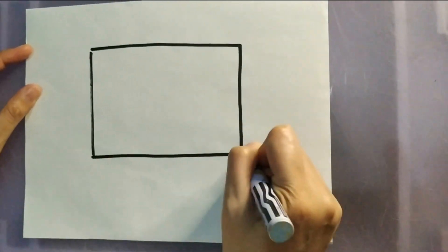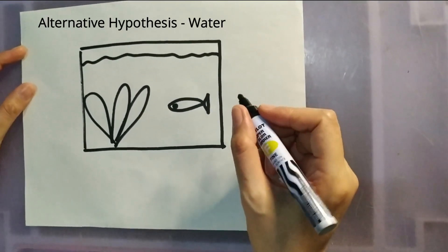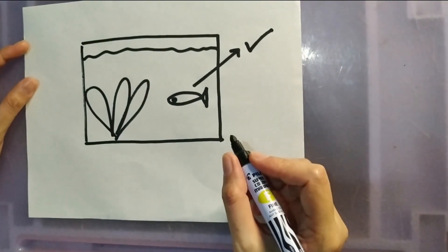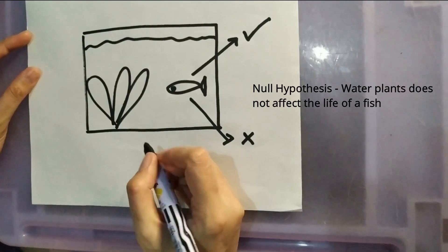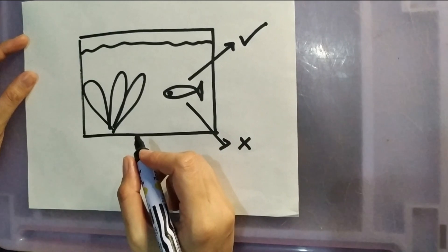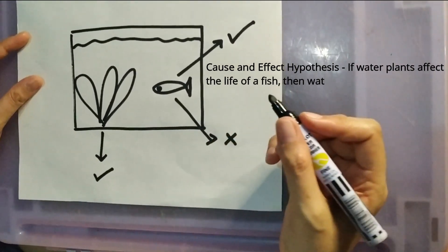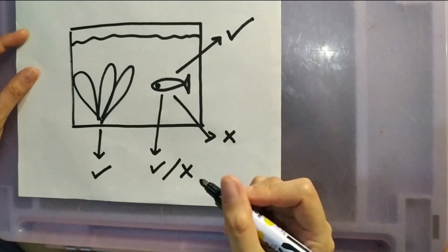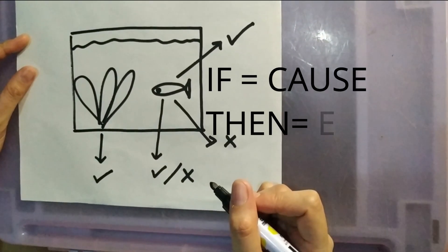For example, our problem is finding the effect of water plants on the life of a fish. The alternative hypothesis is: water plants affect the life of a fish — a positively stated hypothesis. The null hypothesis is: water plants do not affect the life of a fish — a negatively stated hypothesis. The cause and effect hypothesis is: if water plants affect the life of a fish, then water plants will supply enough oxygen for the fish to survive. This is an if-and-then statement, where 'if' is the cause and 'then' is the effect.